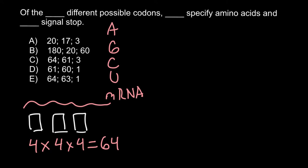So we can cross out all the answers that don't have 64. This is one, and this one, and this one. Now we're left with two answers that include 64 variants of codons.